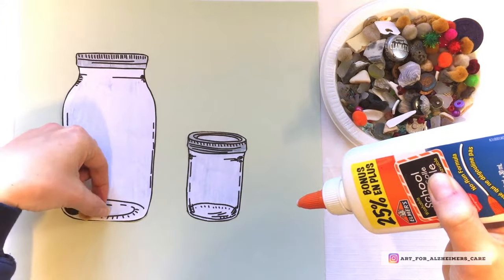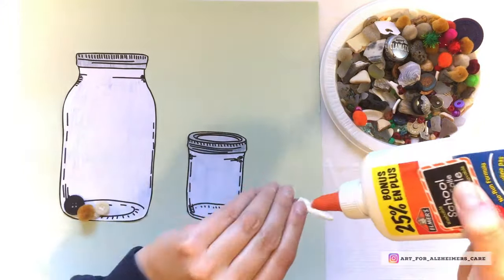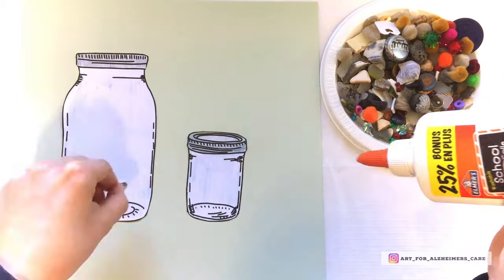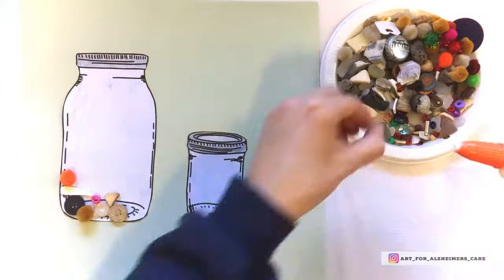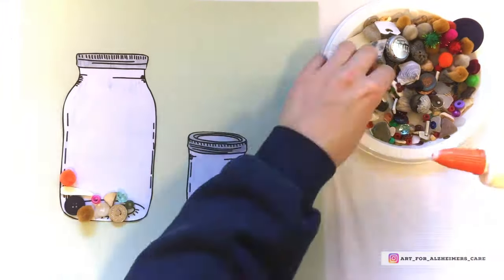So I arranged some of the items onto a plate and grabbing some white glue, I'm just picking out pieces that are on the plate and then gluing them onto the jars on the paper.